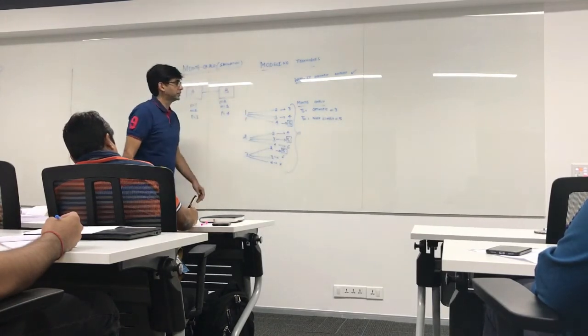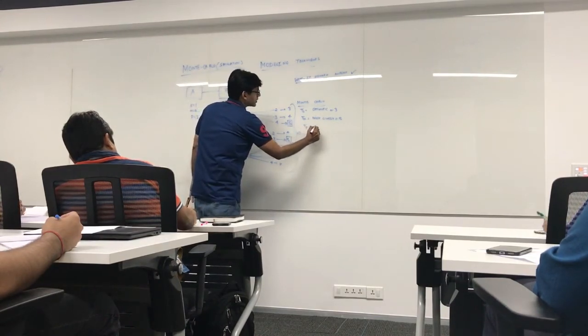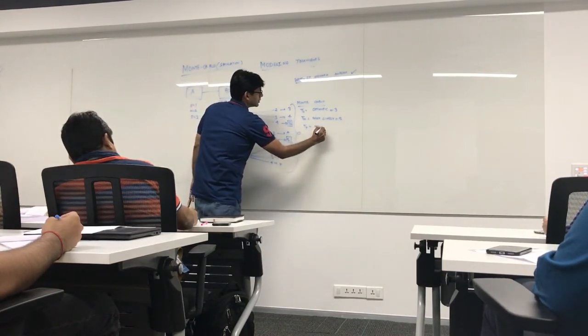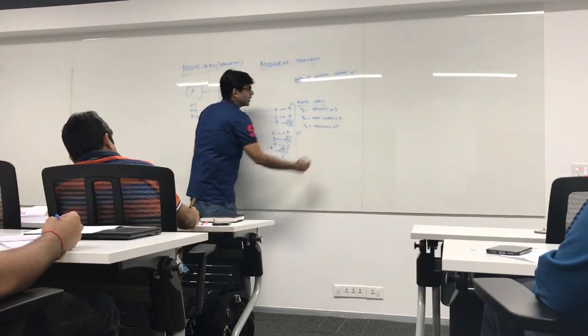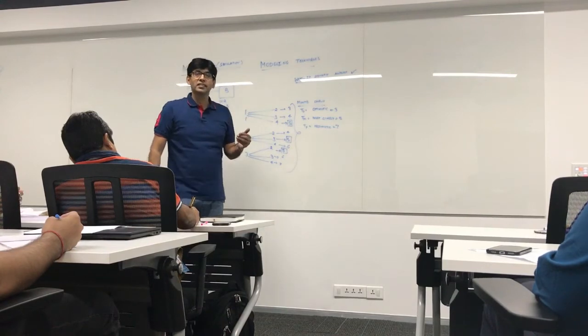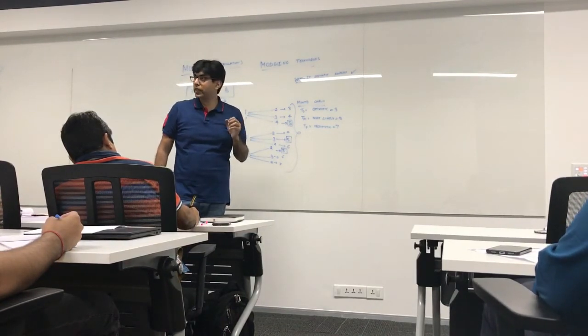Now what is the worst case scenario? 7. So pessimistic can be taken as 7 days.